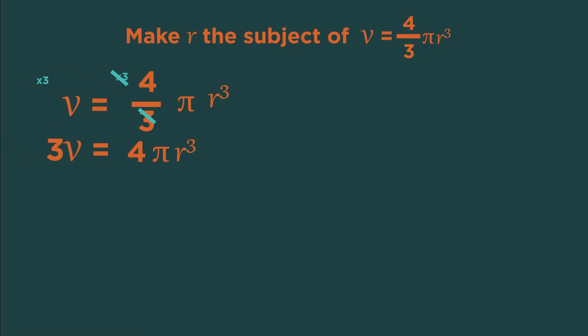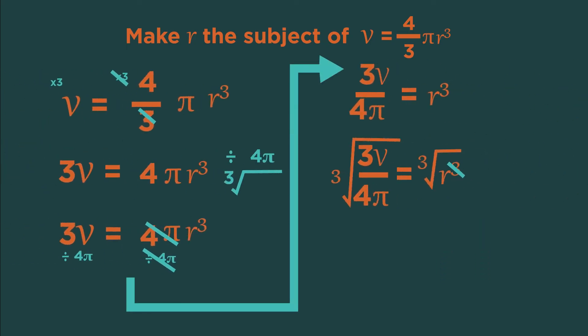Can you now solve the rest of it to make R the subject? First divide by the 4 pi in one go. And then cube root everything. Pause the video and give it a go. Did you get it right? Remember that cube root and cubing are opposites. So they cancel each other out.